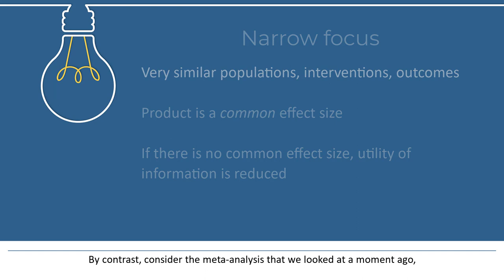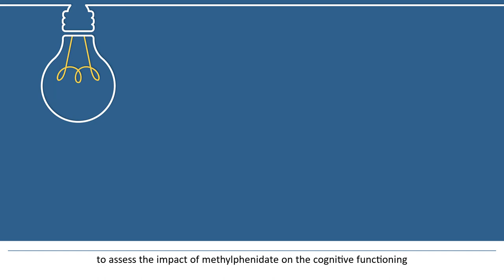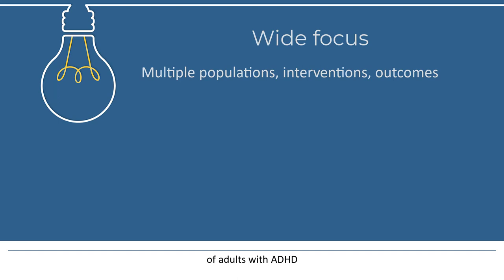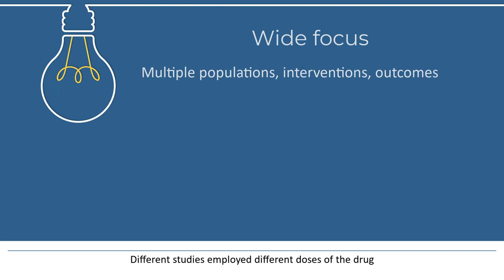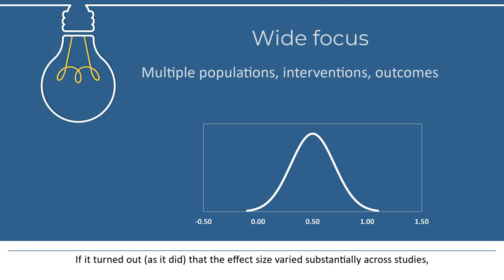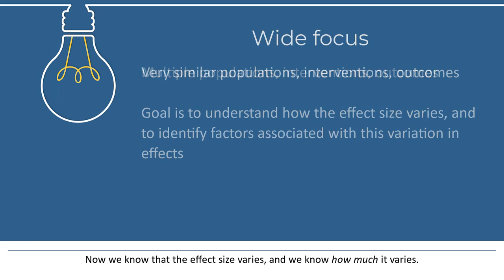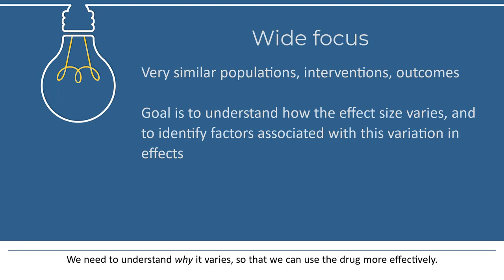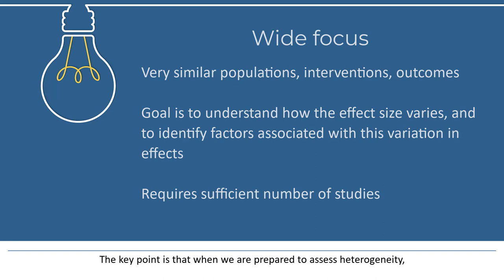By contrast, consider the meta-analysis we looked at to assess the impact of methylphenidate on the cognitive functioning of adults with ADHD. In that analysis, the universe was defined broadly — different studies enrolled different types of people, different studies employed different doses of the drug, and differed in other potentially important ways. Critically, the analysis included enough studies so that we could quantify the extent of dispersion reliably. If it turned out, as it did, that the effect size varied substantially across studies, that in itself is an important finding. Now that we know that the effect size varies and we know how much it varies, we need to understand why it varies so that we can use the drug more effectively. The key point is that when we are prepared to assess heterogeneity, the presence of heterogeneity makes the analysis more useful, not less useful.